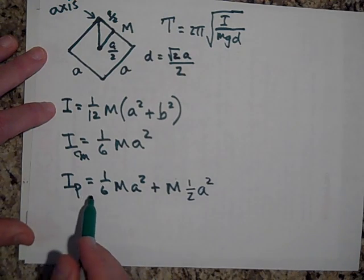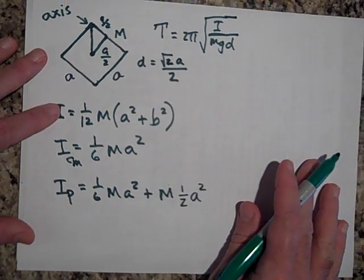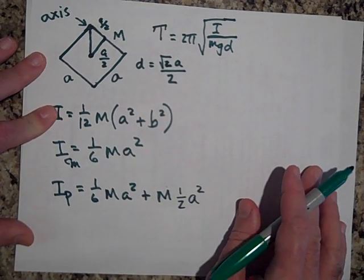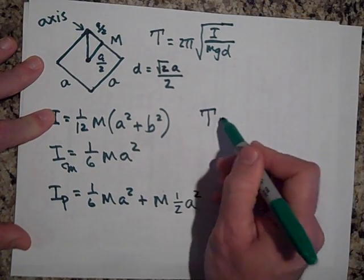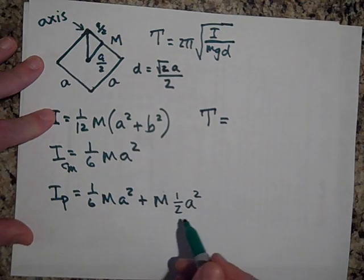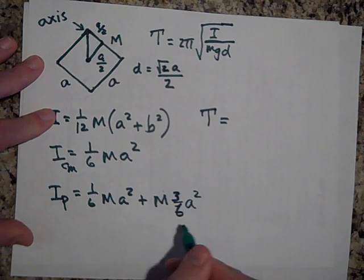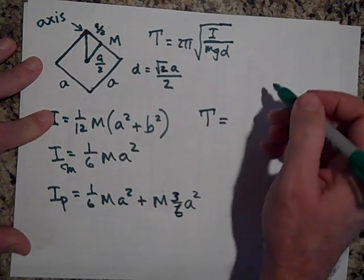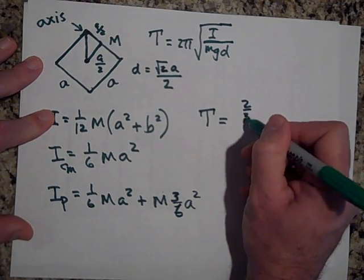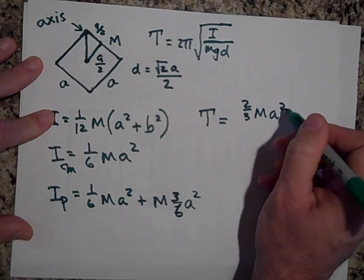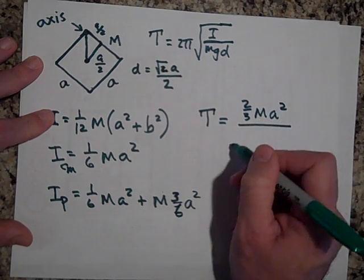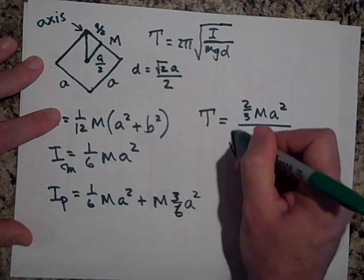Okay, what I'll do then is I'll put that into here and I'll solve for that. So the period is going to be... This should be like three sixths then, so it gives me four sixths or two thirds m a squared. I forgot the two pi.